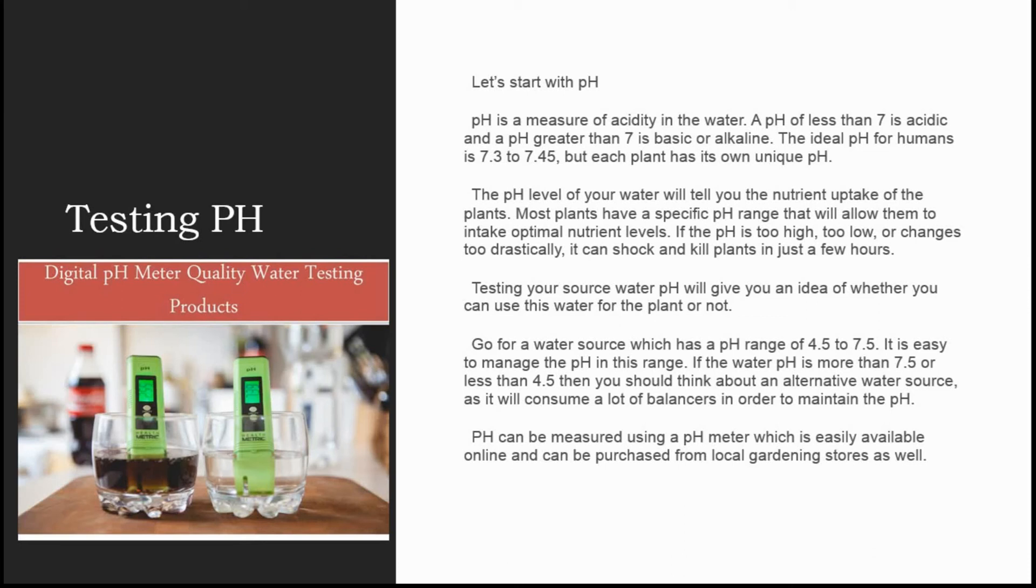The ideal pH for humans is 7.3 to 7.45, but each plant has its own unique pH. The pH level of your water will tell you the nutrient uptake of the plants. Most plants have a specific pH range that will allow them to intake optimal nutrient levels.